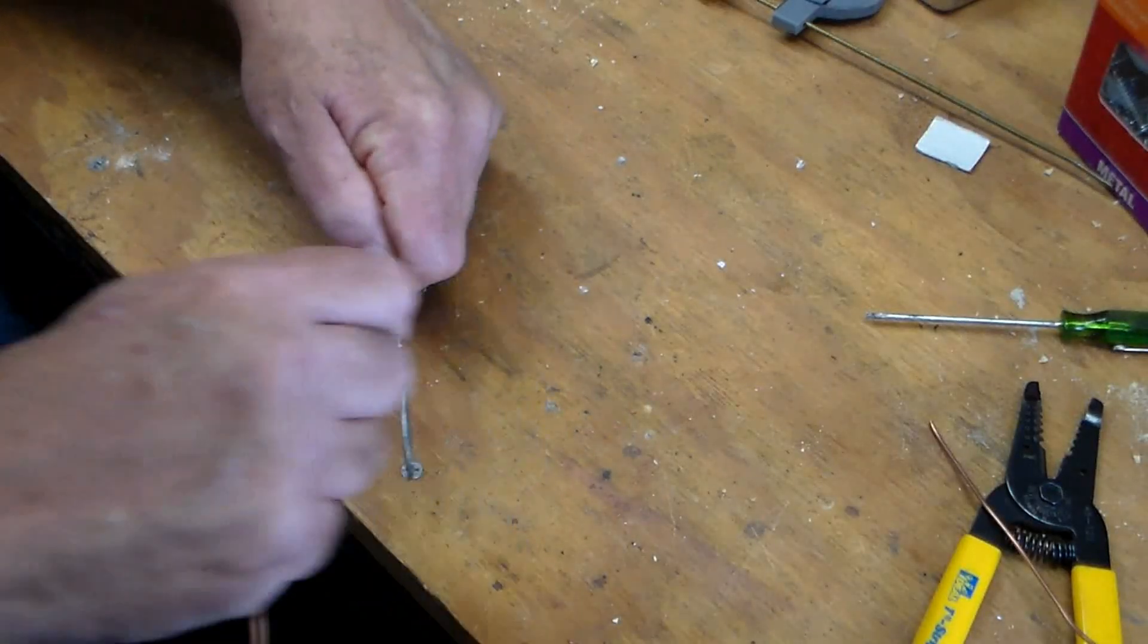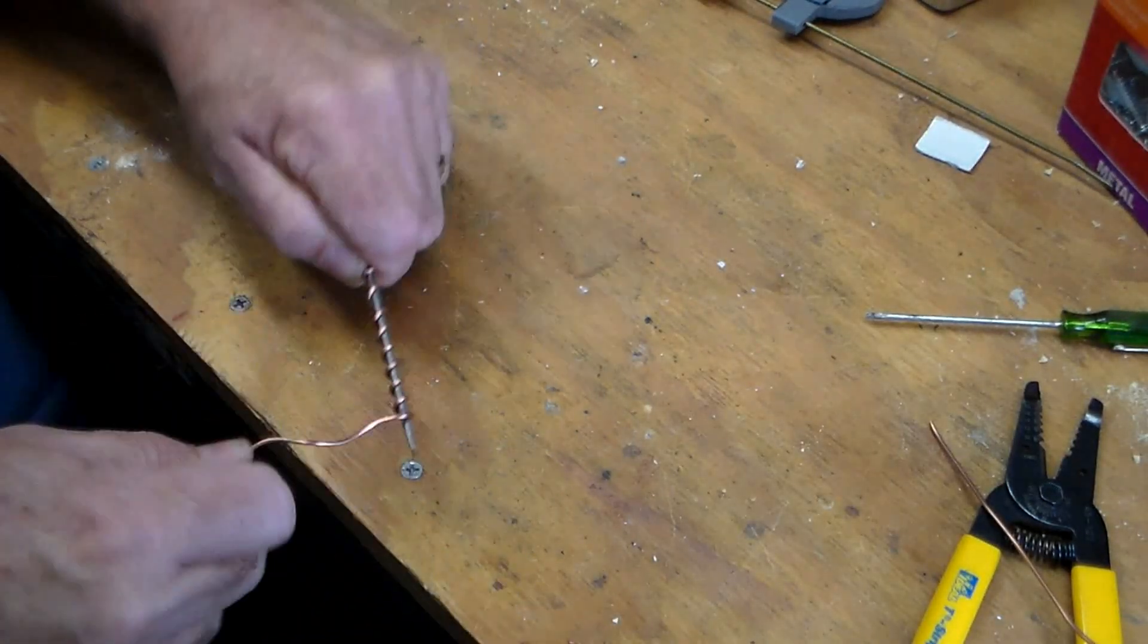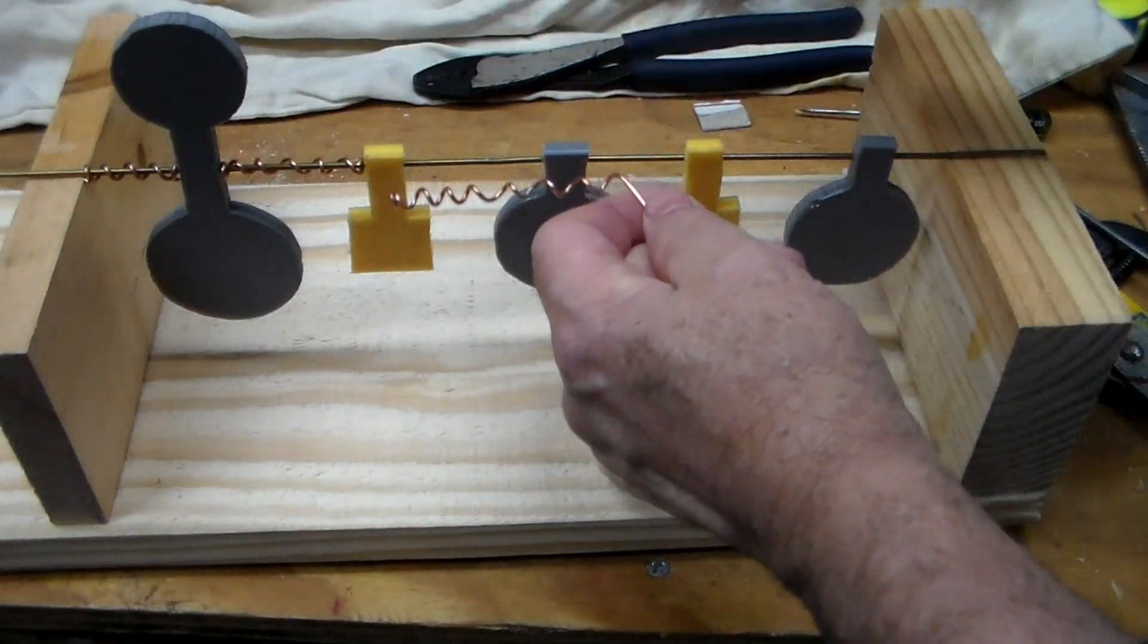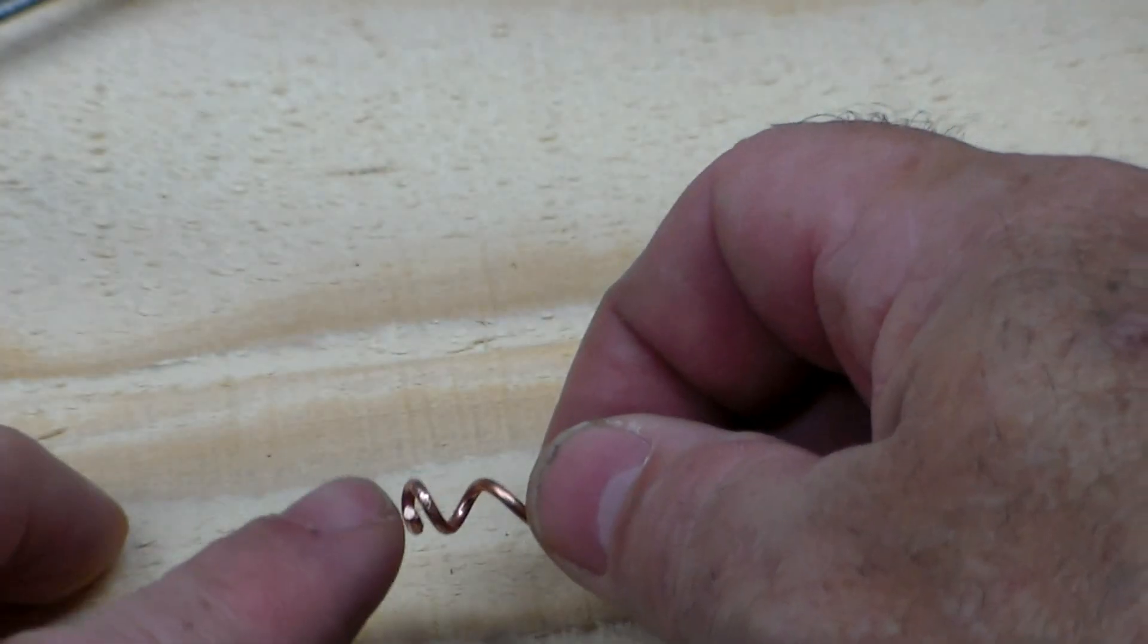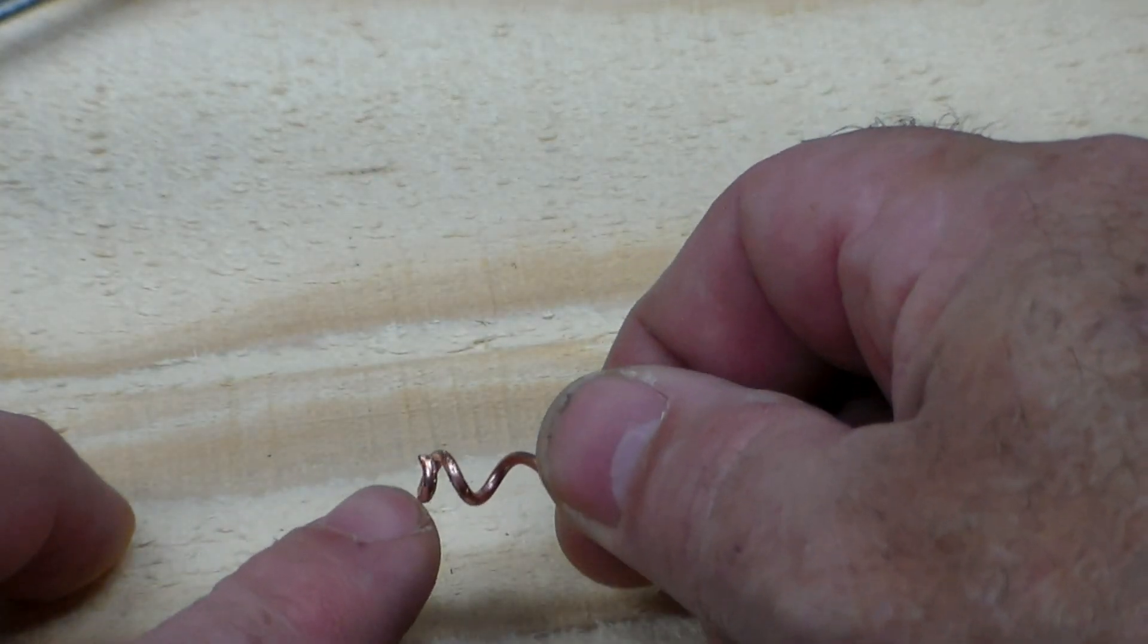The spacers are made with 14 gauge copper wire wound on a screwdriver that's thicker than the coat hanger. Cut them to length. I spent time closing the ends, but I'm not sure that's necessary.